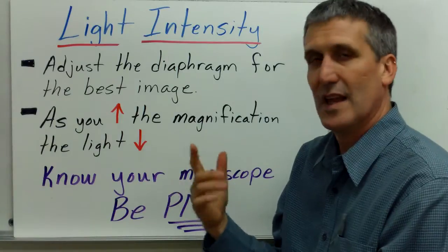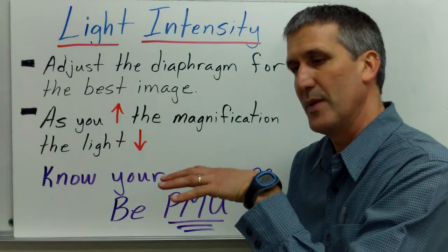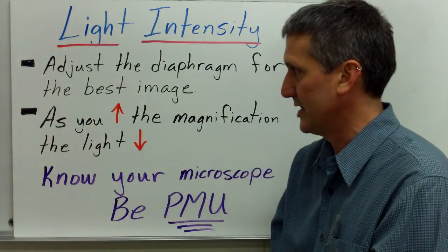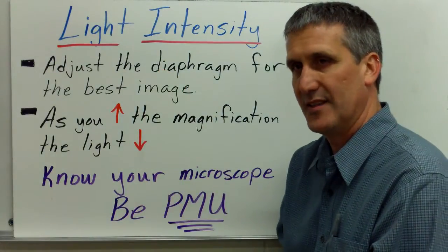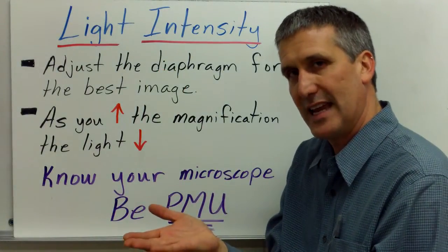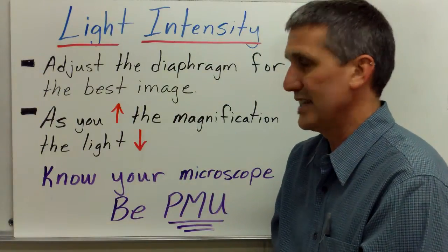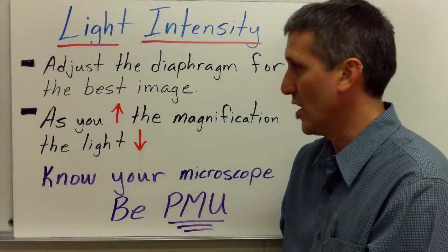Another thing you need to keep in mind is light intensity. It's a compound light microscope. The image is formed by the light passing through the specimen and then being magnified by the lenses. So, you always want to be checking and adjusting the diaphragm, which is underneath the stage, to see how much light is passing through the specimen. Because if there's too much light, it could be washed out. If there's too little light, the image may be too dark.